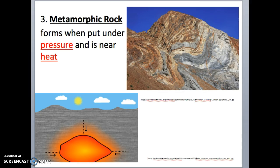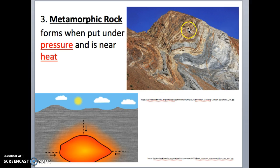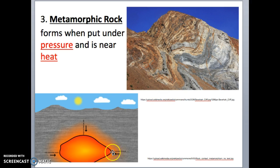The third type of rock is metamorphic rock. Metamorphic rock forms when there is a lot of pressure as well as heat. You can see that because of extra pressure it has bands, but those bands are wavy — that's because this rock was put under a lot of pressure and heat. Here's a diagram that summarizes how metamorphic rocks are formed, with yellow-orange representing heat and arrows representing pressure.